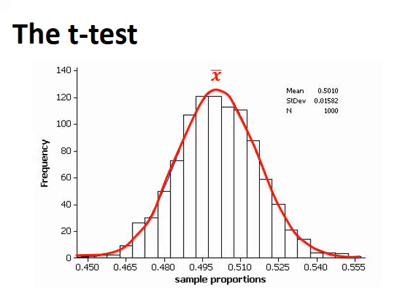This is different from discontinuous variation, whereby we would have distinct categories into which individuals might fall — for example, blood groups A, B, AB, or O. People will only fall into one of those four distinct categories. With continuous variation, we can see from the graph that we've got a range of values, and most individuals will fall around the mean value in the middle.